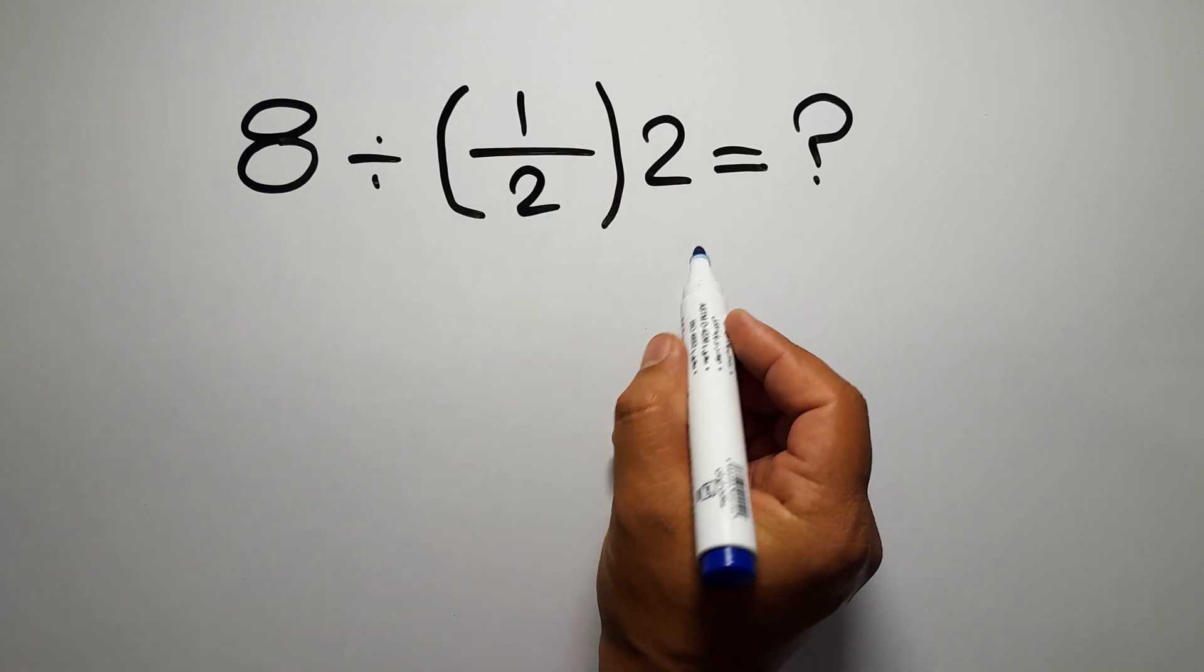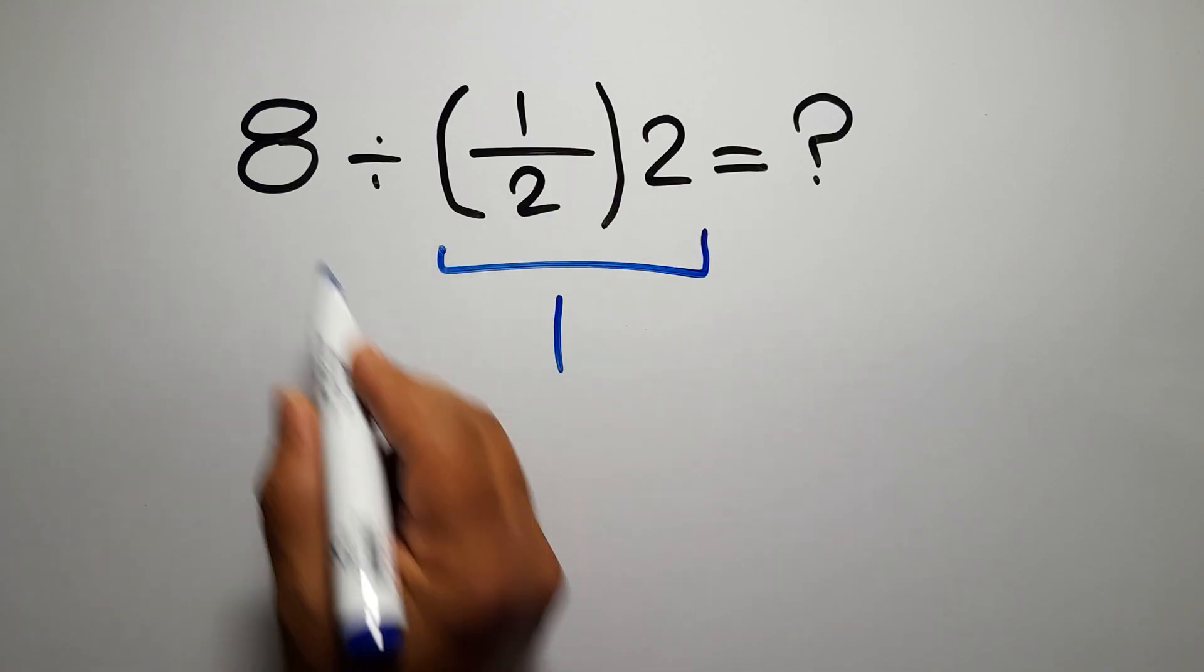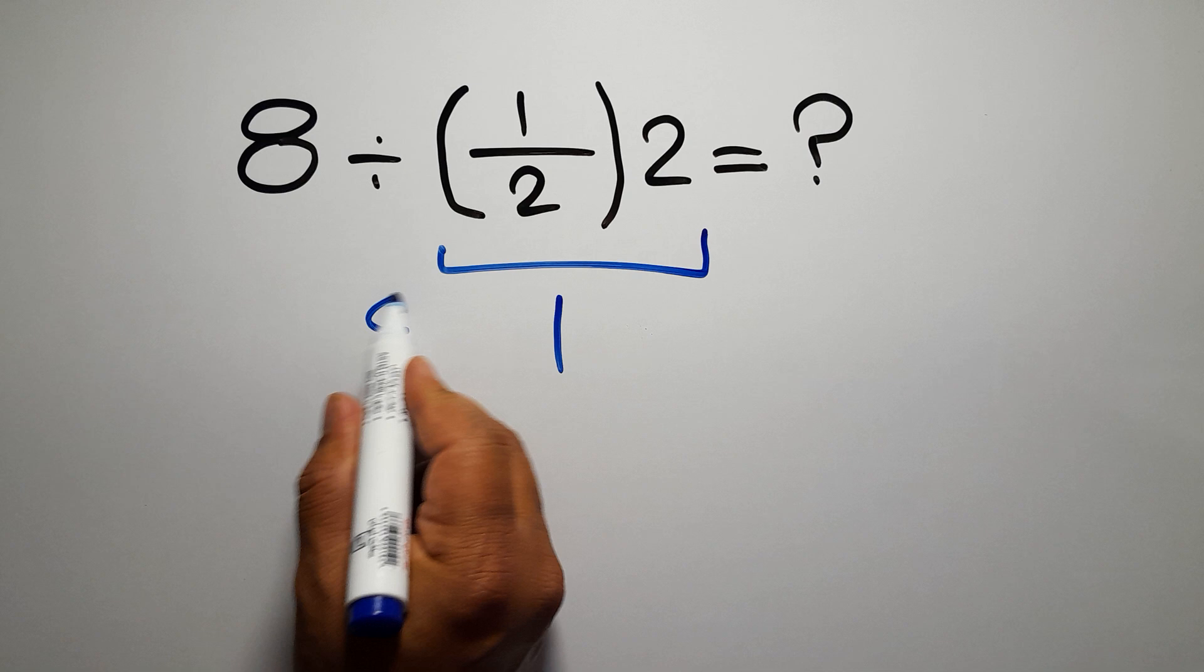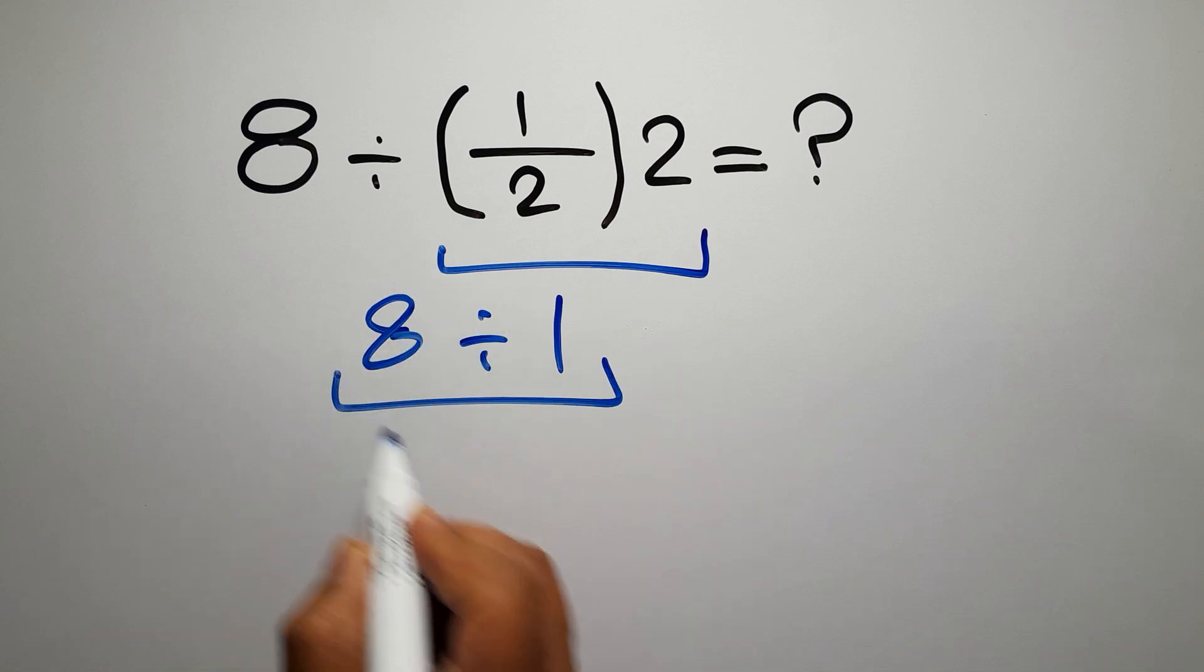1 over 2 times 2 gives us 1, and 8 divided by 1 equals 8, but this answer is not correct,